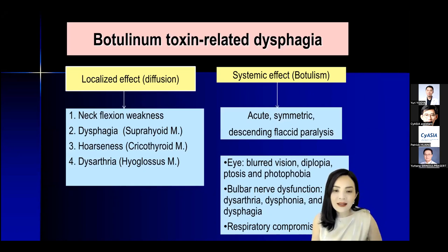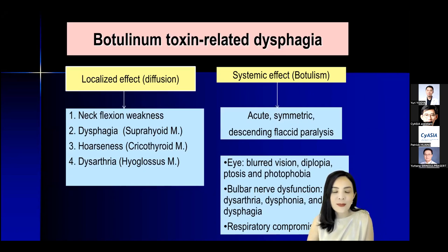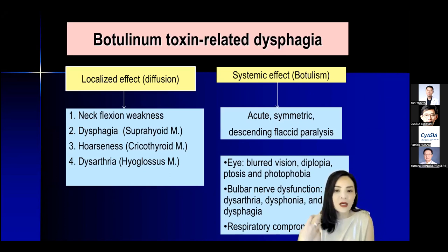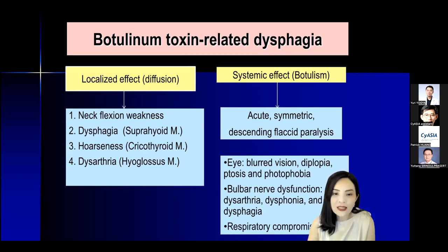You need to be aware of systemic side effects like botulism. If the patient has botulism, they will usually have systemic symptoms — for example, blurred vision, ptosis, or bulbar nerve dysfunction. It is not only dysphagia but also dysarthria and dysphonia along with dysphagia.